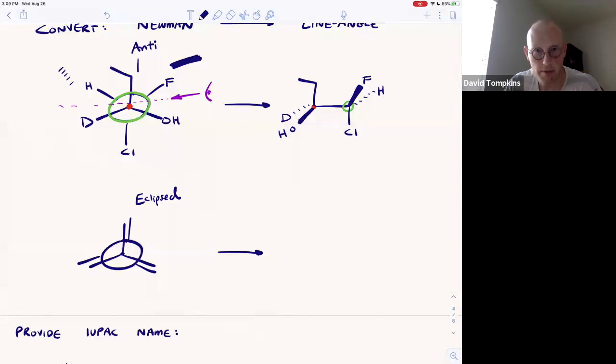Now you can assign R and S. We'll talk about problems when we assign configuration once we reach stereochemistry. For now, you should be able to go from a Newman projection to a line-angle formula and back and forth.